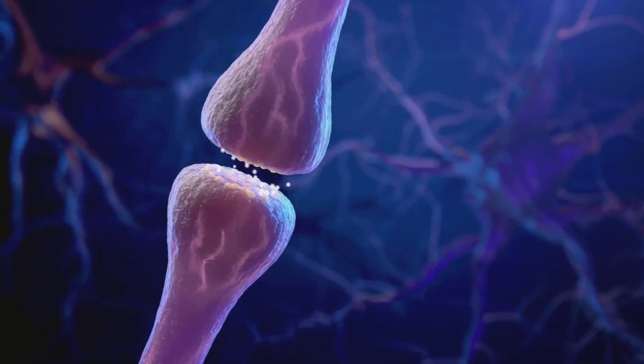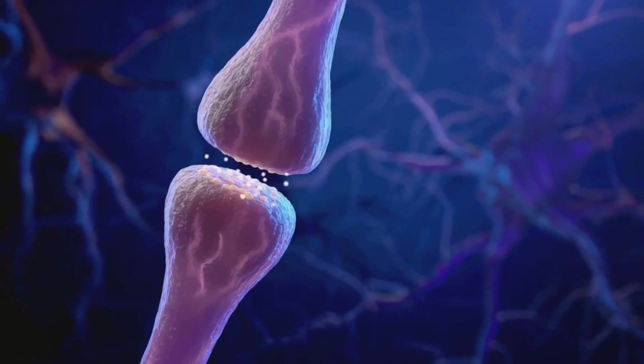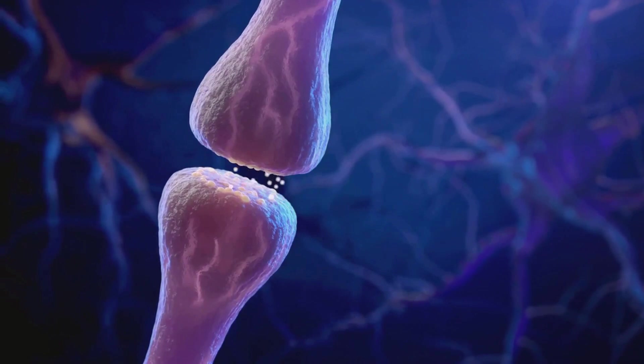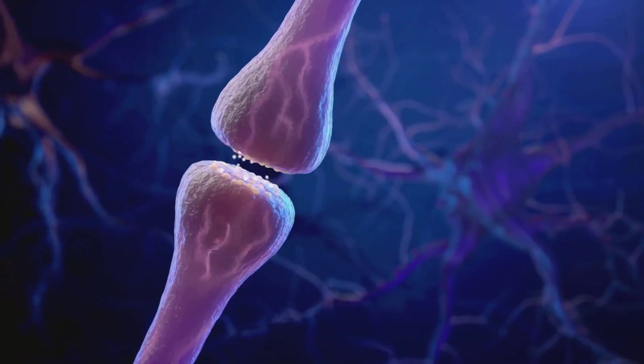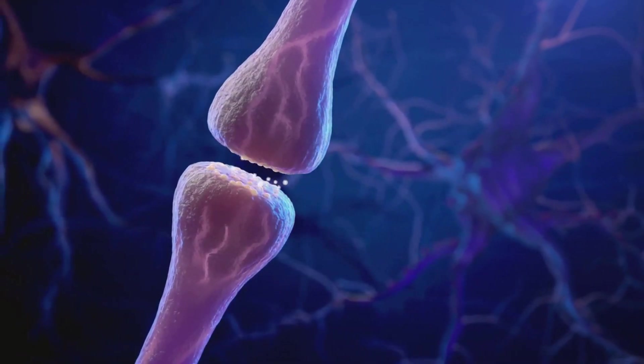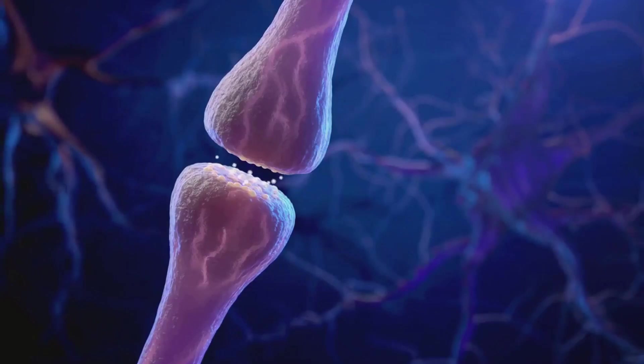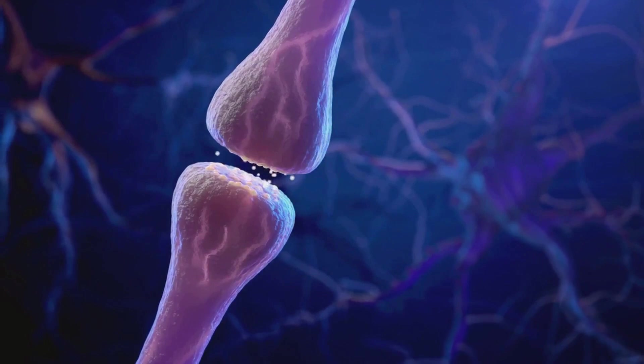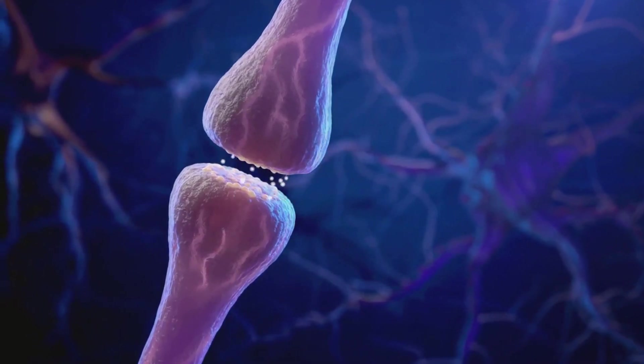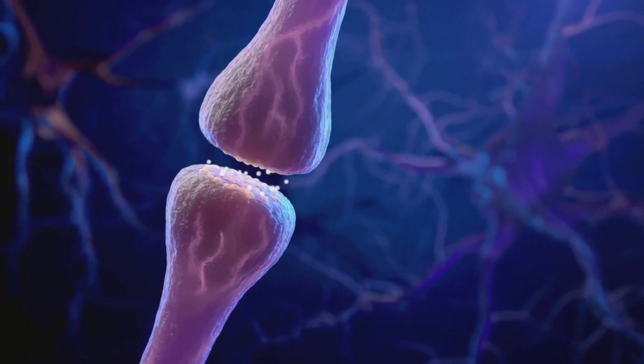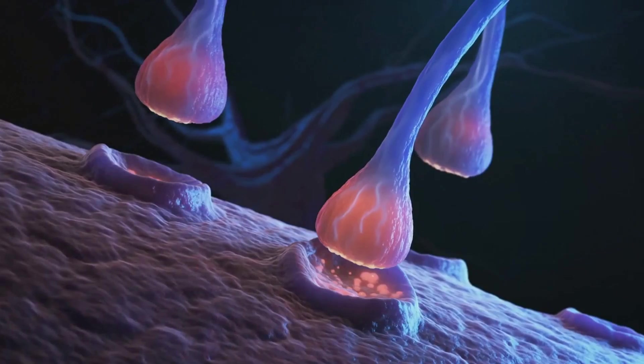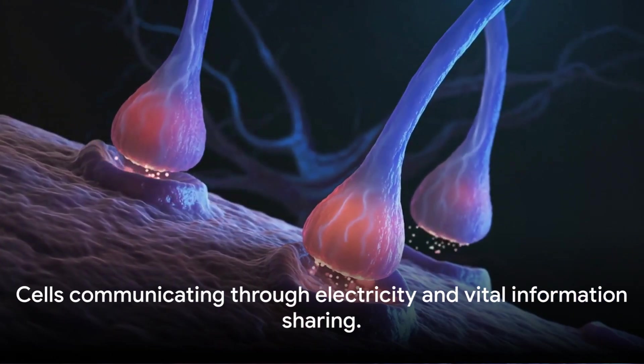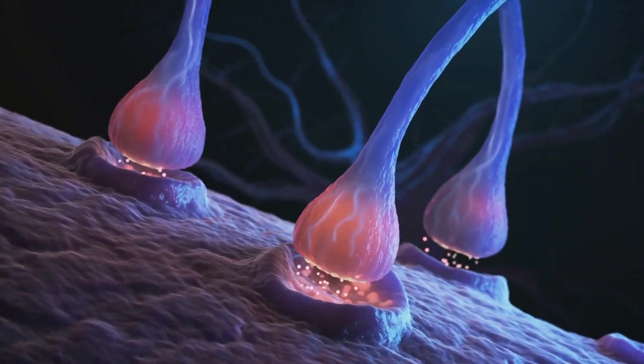In this scenario, the hormone is like a key, unlocking specific ion channels and letting positively charged ions flood into the cell. This influx of ions creates an electrical change in the cell, a signal that needs to be passed on. Some of these ions flow into the neighboring cell through special channels, relay runners passing the baton in a never-ending race. This is how cells talk, how they share vital information, how they coordinate their actions. Our cells are constantly chattering away, using electricity as their language.